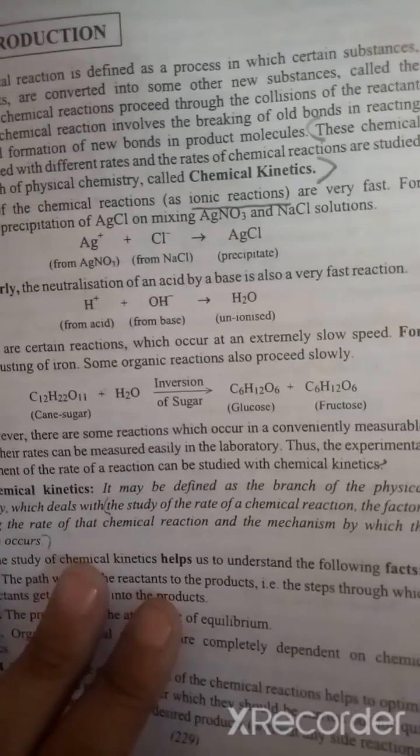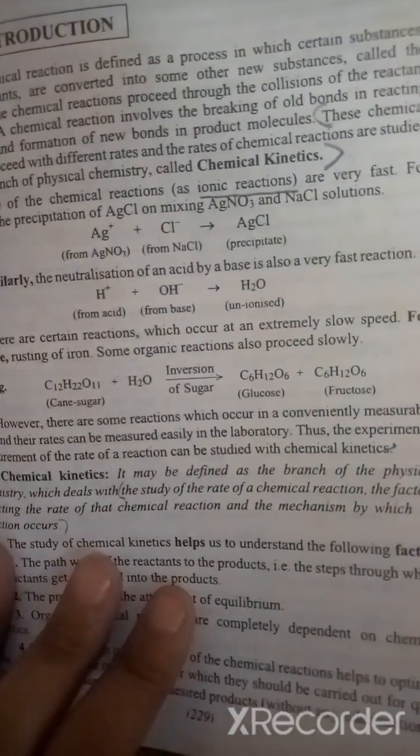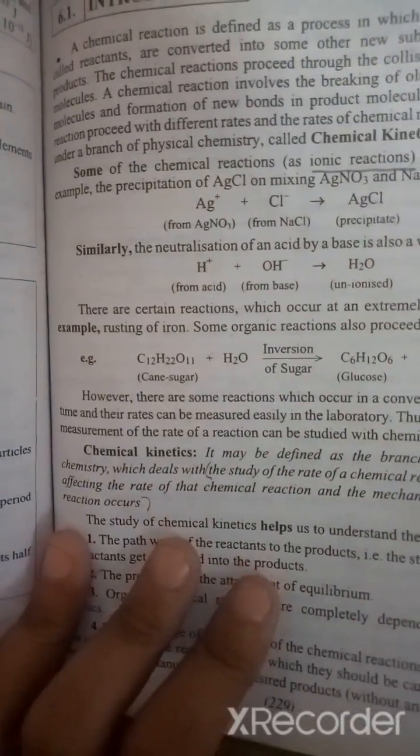Chemical kinetics is defined as the study of the rate of chemical reaction and the factors affecting the rate of that chemical reaction and the mechanism by which the reaction occurs.